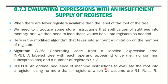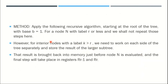The output is an optimal sequence of machine instructions to evaluate the root into R registers, using not more than R registers. For example, if there are R registers, we use R0, R1, R2, up to R minus 1. The methodology is a recursive algorithm starting at the root of the tree, with base value 1. For a node n, it requires either R number of registers or fewer than R.